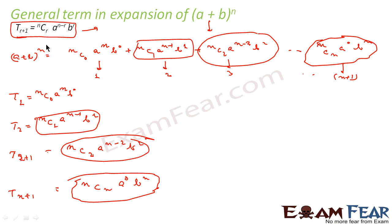Please remember this formula: T of r plus 1 equals nCr times a to the power n minus r times b to the power r. This is the r plus 1th term, not the rth term. So when you want the first term, put r equal to 0; T1 equals nC0 times a to the power n. When you want the second term, put r equal to 1; T2 equals nC1 times a to the power n minus 1 times b. Please remember this formula. Thank you.